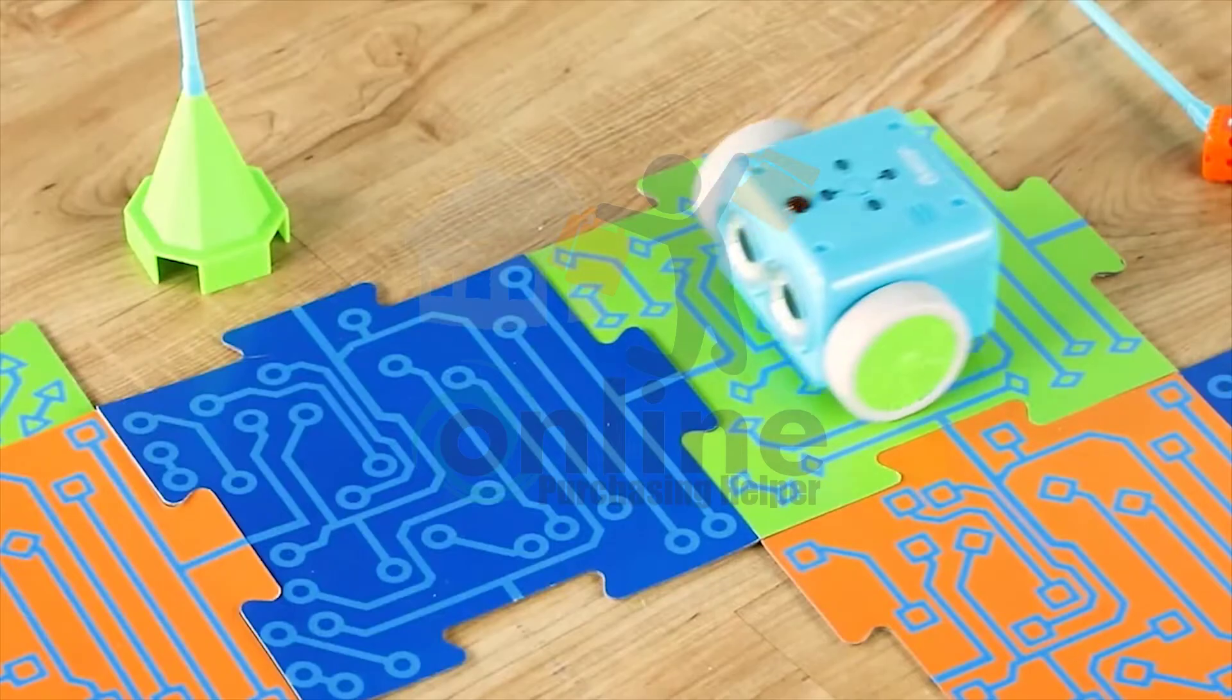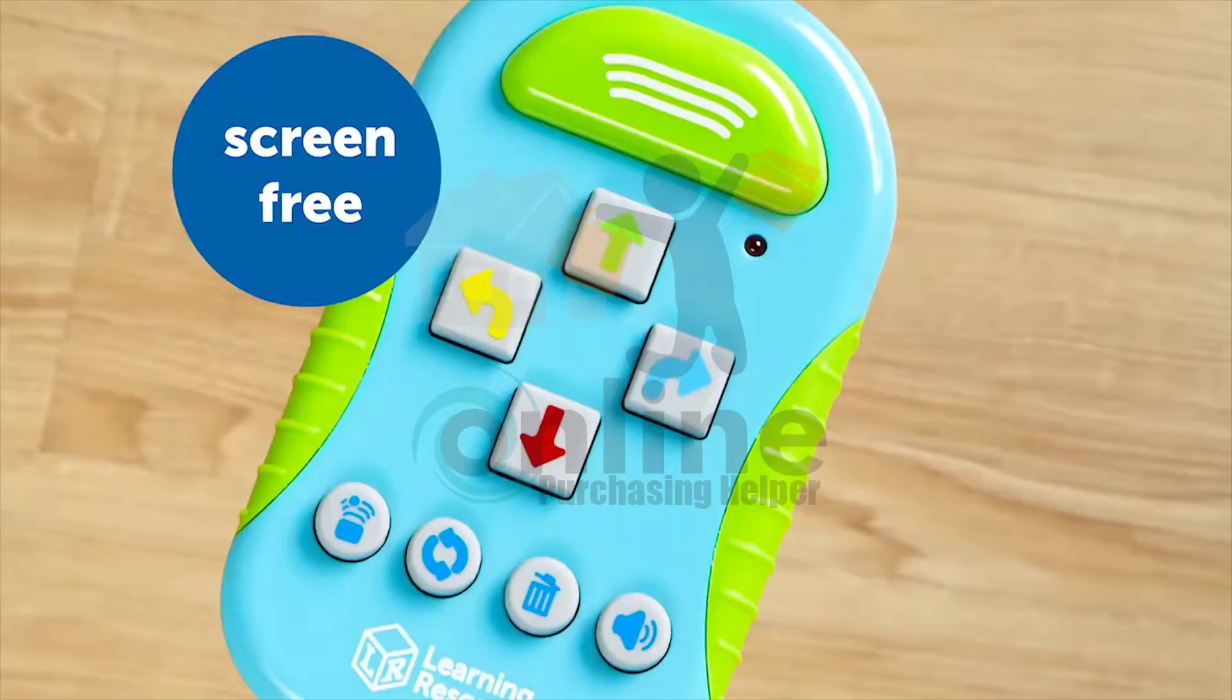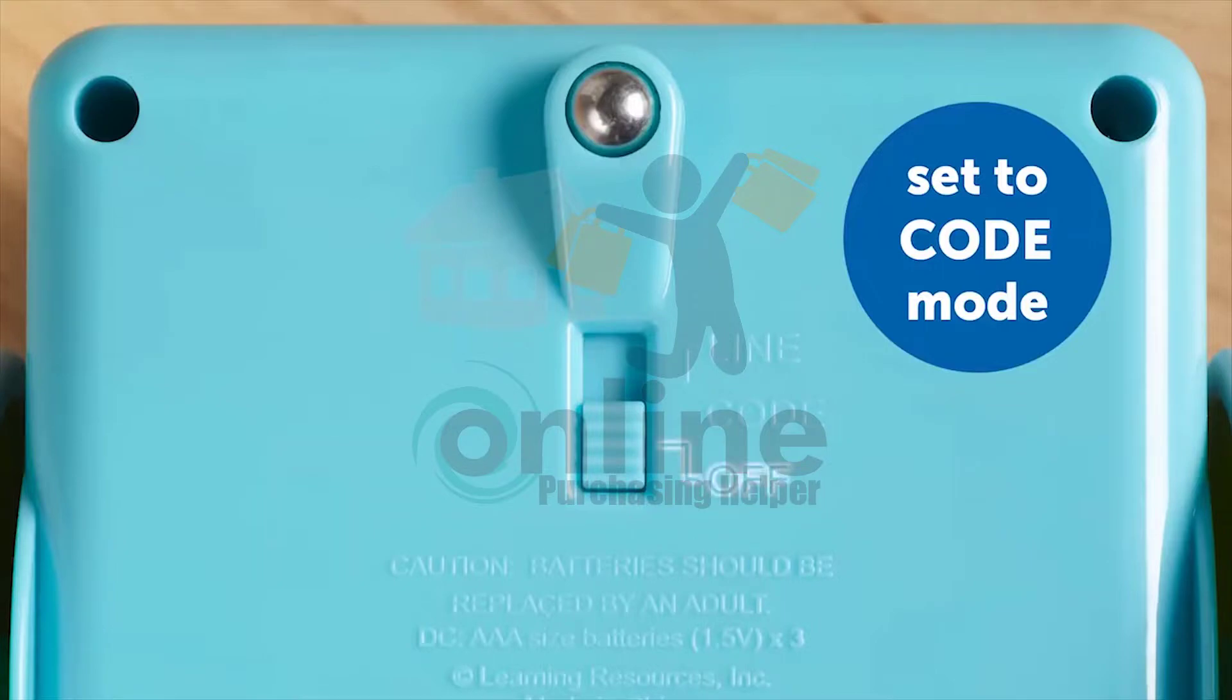Botly is ready to use right out of the box. He's screen free. All you need is the remote transmitter to code. To begin, turn Botly on to code mode.